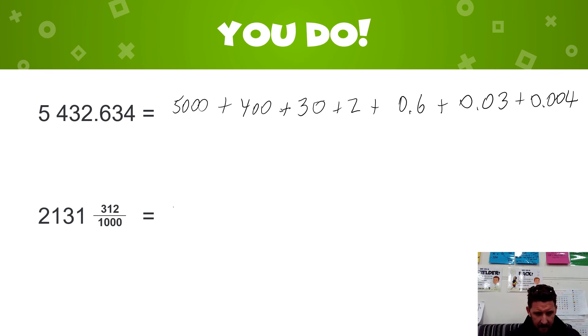The next one, I'm going to go two thousand plus one hundred plus thirty plus one. Now remember I want this one in fractions, so it's going to be three tenths, one hundredth, and two thousandths.